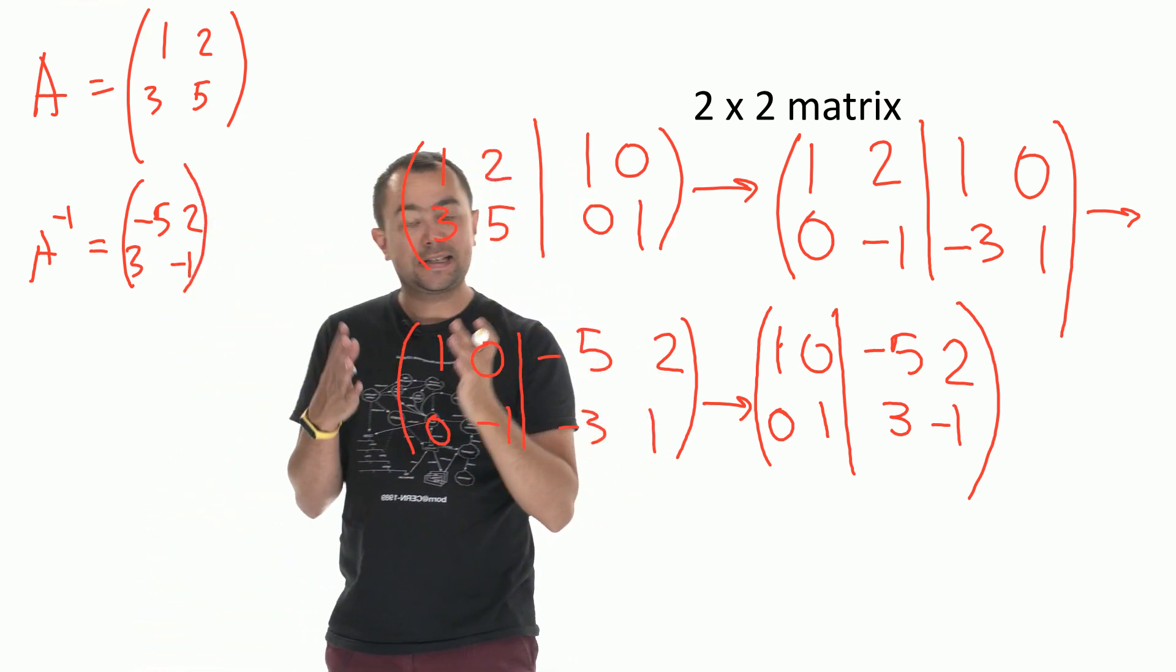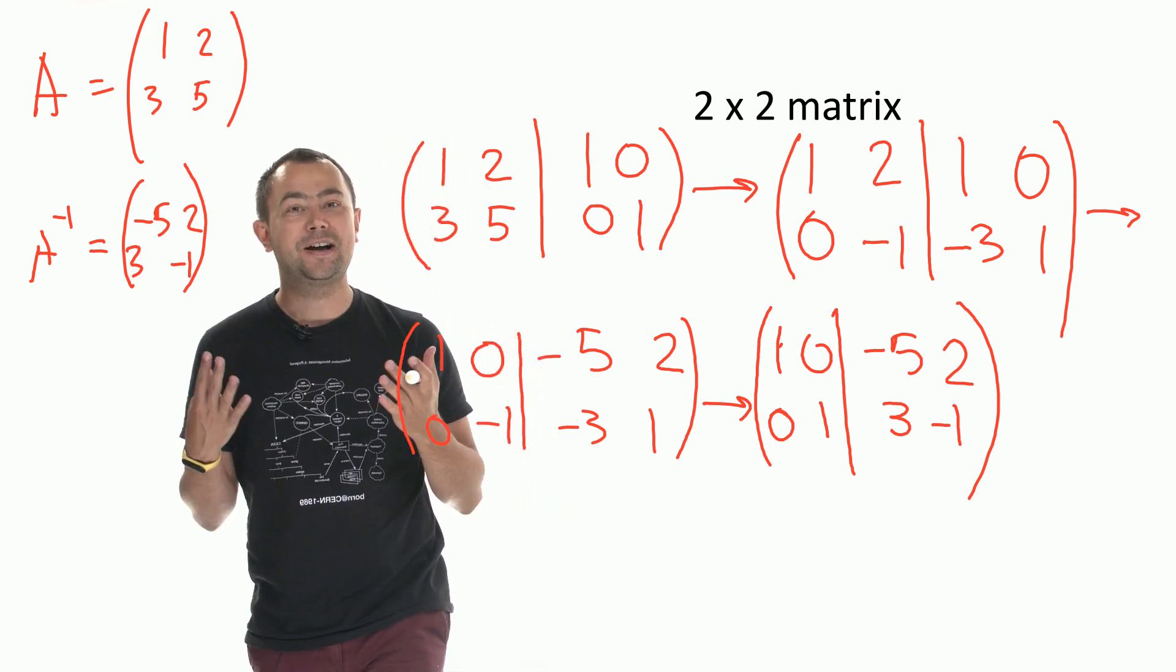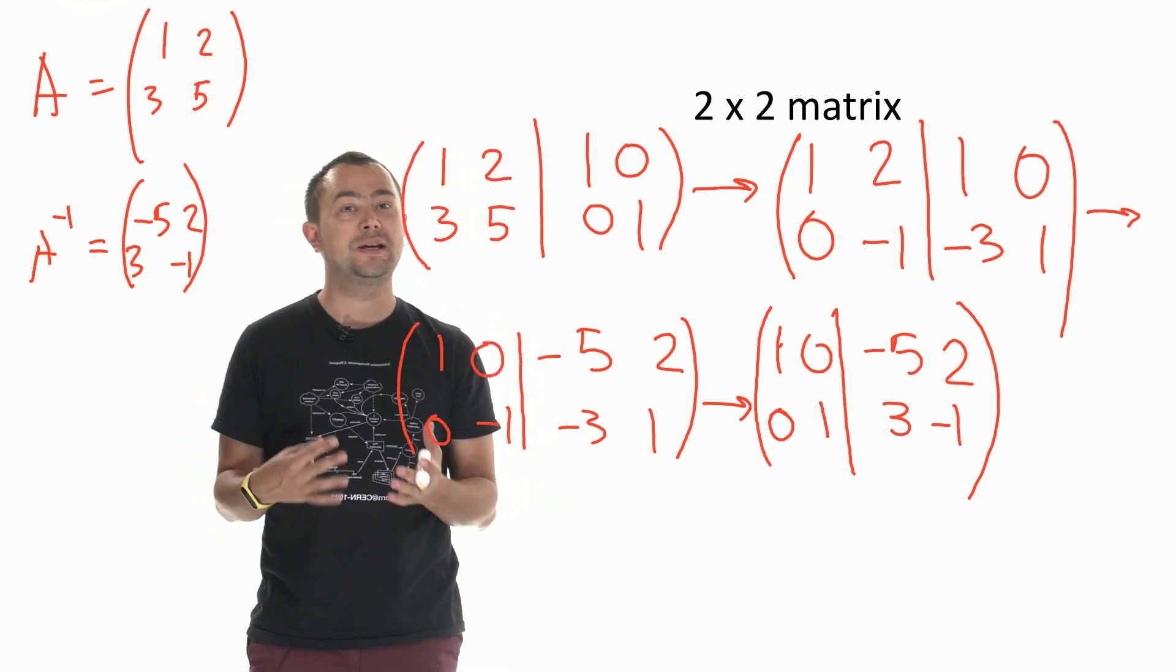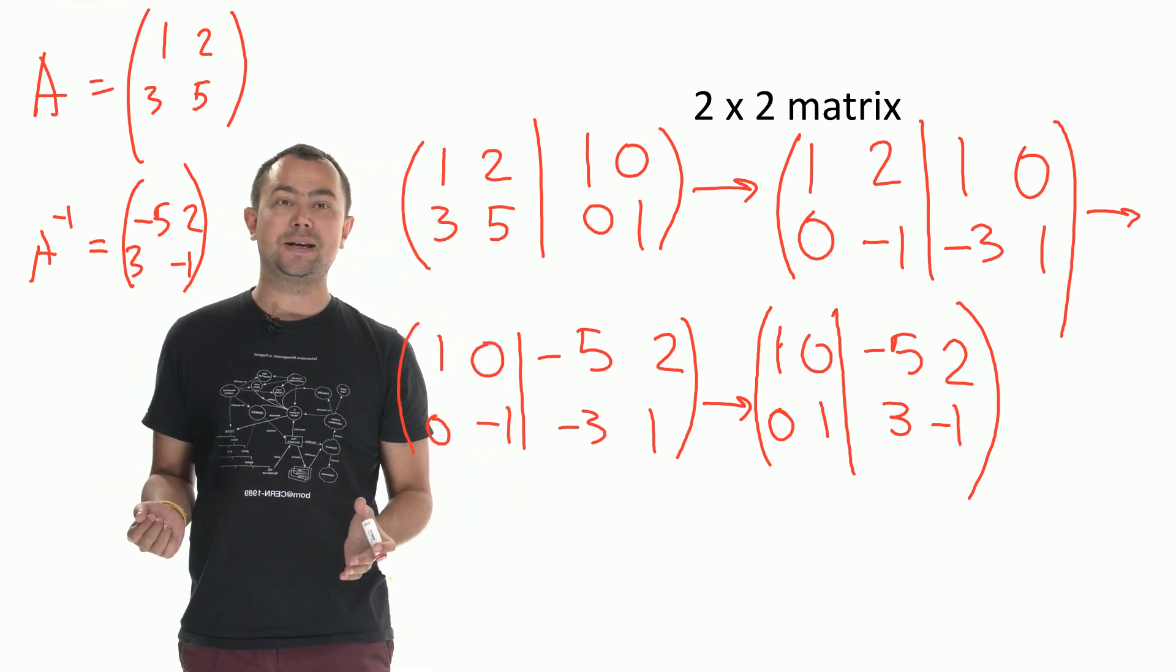And that's it. This is a very easy method for a 2 by 2 matrix. Well actually any method of finding the inverse with a 2 by 2 matrix is relatively easy. It gets harder with the 3 by 3 matrix.